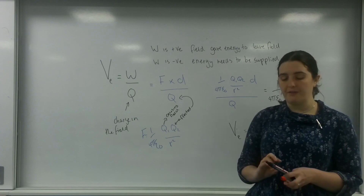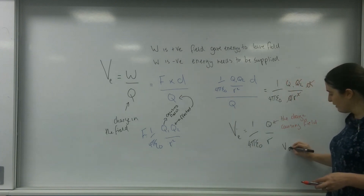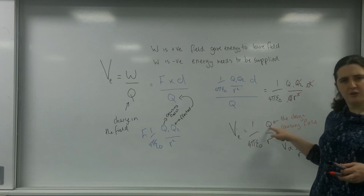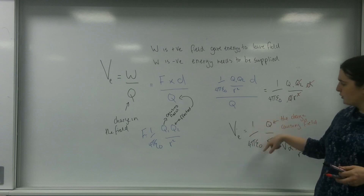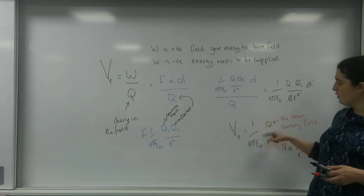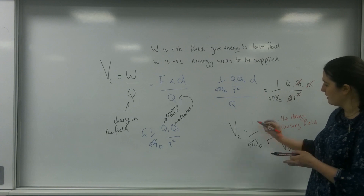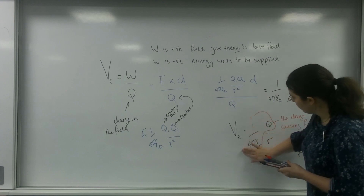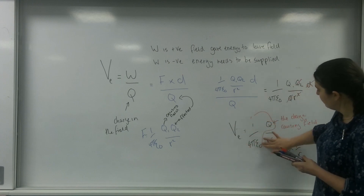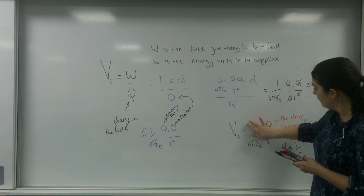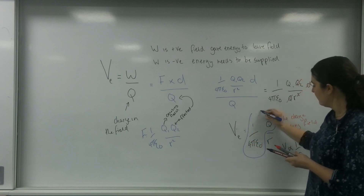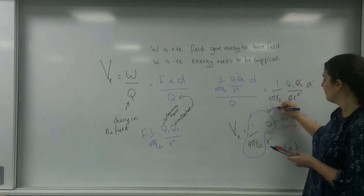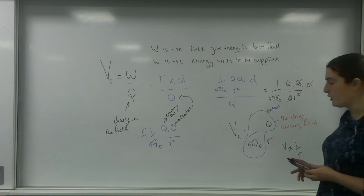In my previous video I talked about the fact that V is directly proportional to 1 over R. And as you can see, 1 over 4πε₀ is a constant, and the charge Q causing the field is not changing — so V is proportional to 1 over R.